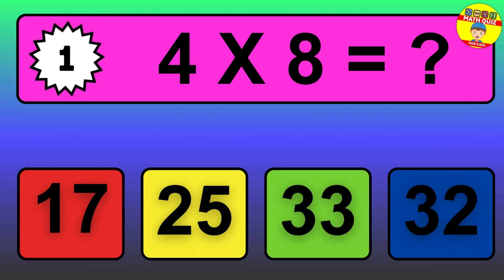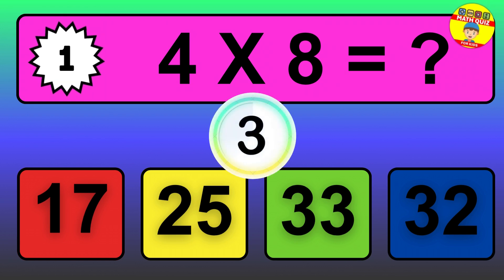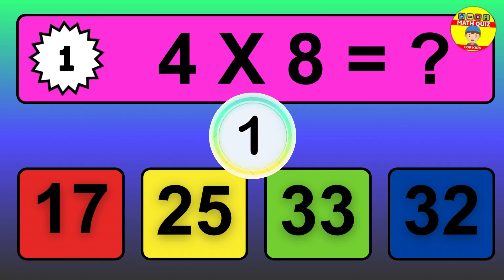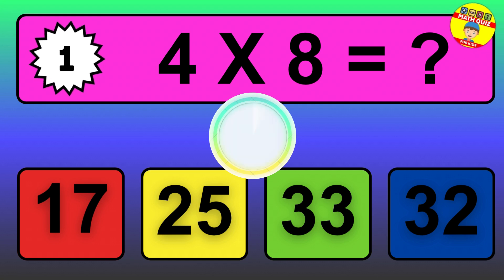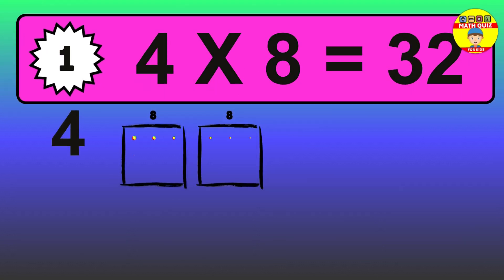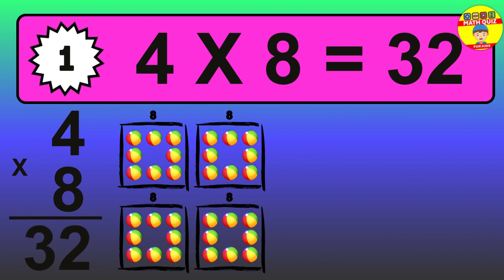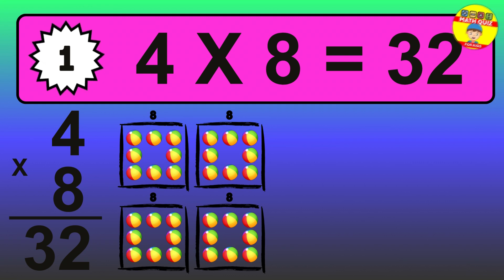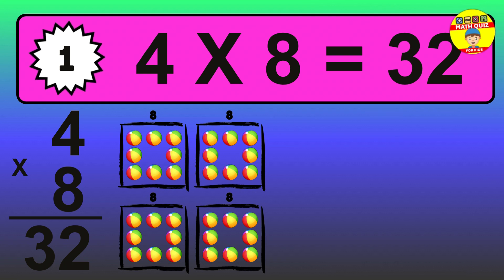Question 1. 4 times 8 equals what? The answer is 4 times 8 is 32. To calculate, we have 4 groups with 8 balls each one. So, how many balls do we have? 32 balls.